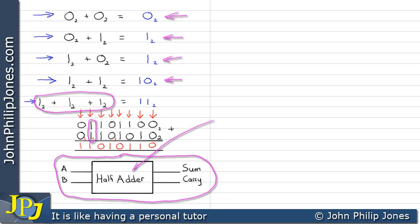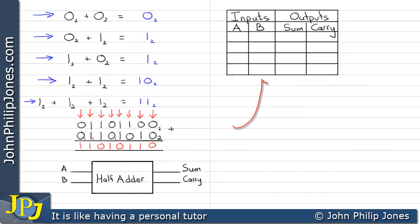In this video we're going to concentrate on the half adder and look at what combinational logic circuit goes inside it. Here we can see a truth table, and we're going to relate this truth table to the schematic diagram. The schematic diagram has inputs A and B, and the truth table likewise has inputs A and B.